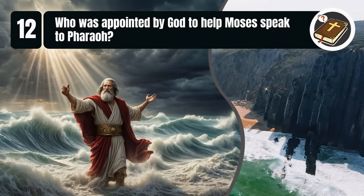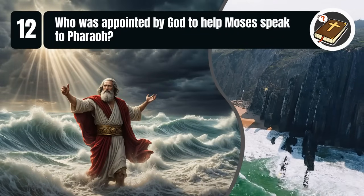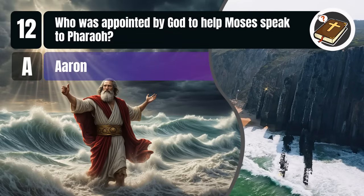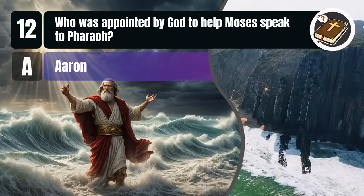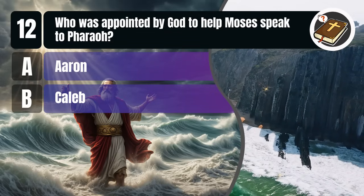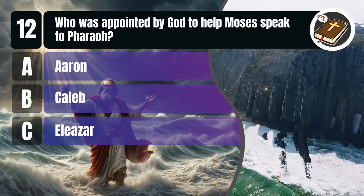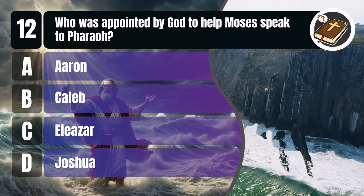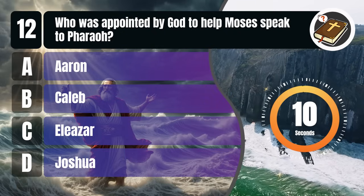Question 12. Who was appointed by God to help Moses speak to Pharaoh? A. Aaron, B. Caleb, C. Eliezer, D. Joshua. You get 10 seconds.